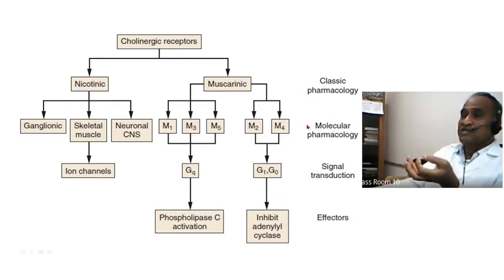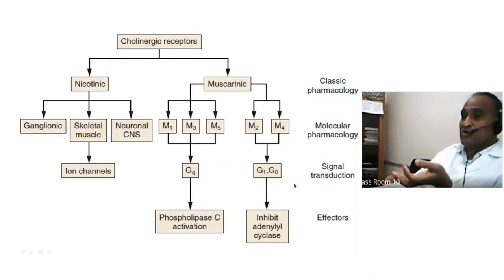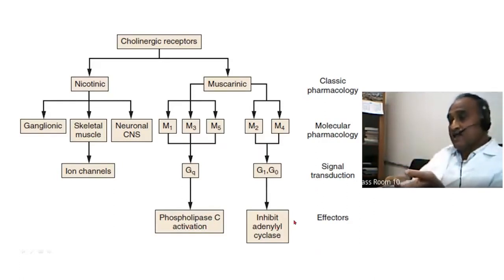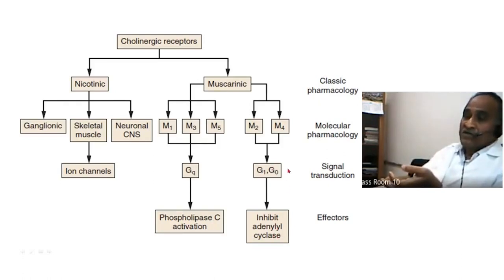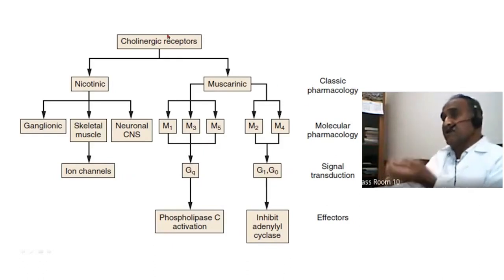The M2 receptors — acetylcholine sitting on these receptors activates G-protein at GQ, GI, or G0. That signal transduction leads to either activation of phospholipase C, suppression of adenyl cyclase activity, or activation of IP3 and diacylglycerol activity. This is about the cholinergic receptors and their actions on the effectors.